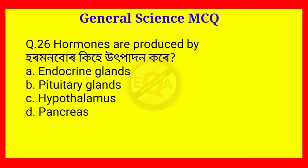Question number 26. Hormones are produced by? The answer is Option A — Endocrine glands.